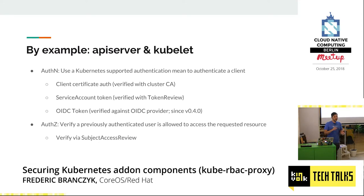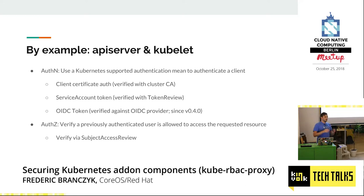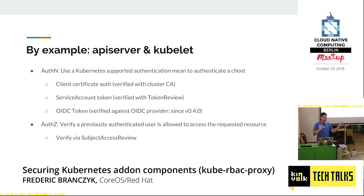Now that we kind of understand how RBAC works and what our problem set is, let's have a quick look at how Kubernetes already does this without the Prometheus part. There are two things involved with RBAC. RBAC is only the authorization part, but in order for us to be able to perform authorization, we need authentication. Because otherwise I could just say I am a cluster admin, and a cluster admin obviously has rights to do whatever. We want to make sure that Prometheus only has the access that Prometheus is supposed to have. The RBAC proxy today implements three authentication mechanisms.